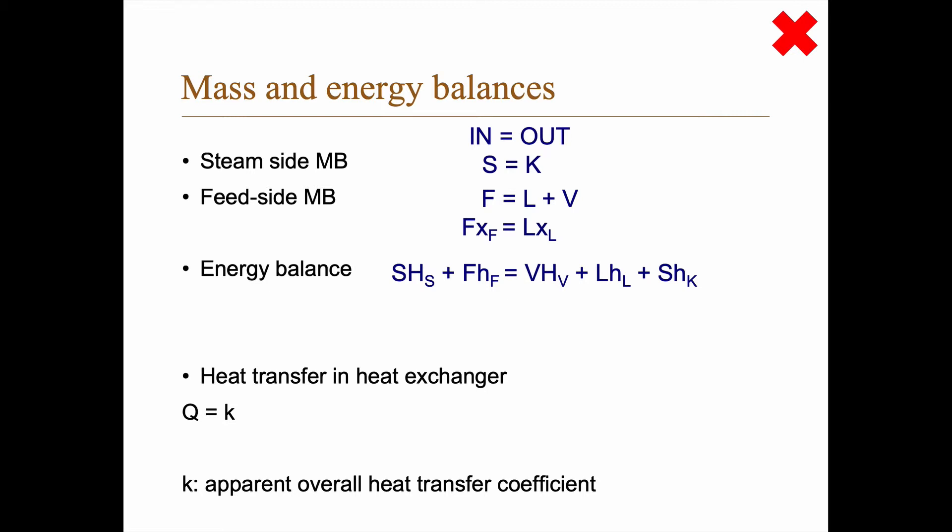We can shuffle this around, and if we collect the S terms on one side, we get S times the evaporation enthalpy, so h_S minus h_K, and that is the energy that the steam gives to the feed side, right? Perhaps I should point out here that you have actually assumed implicitly that we have no heat losses.